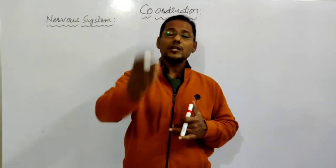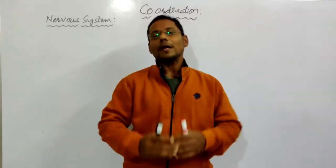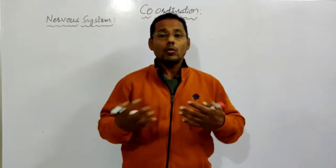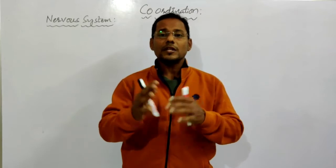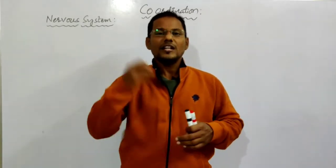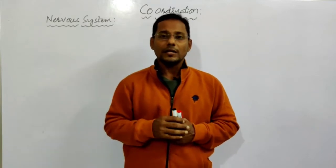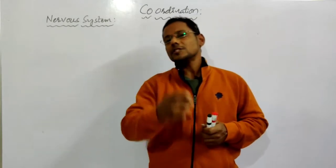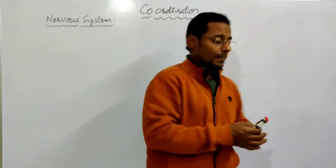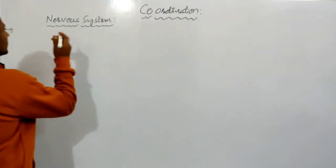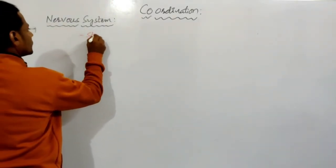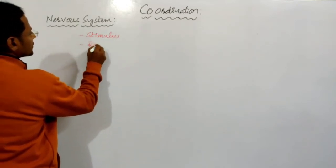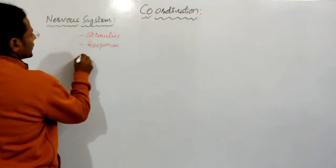How does the nervous system get information from the outside or from our body? The information goes to the brain or the spinal cord and then a response is produced. In our system, the key concepts are stimulus, response, and nerve impulse.